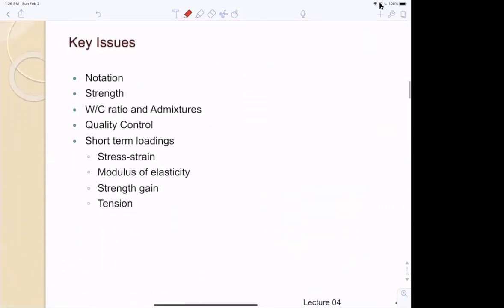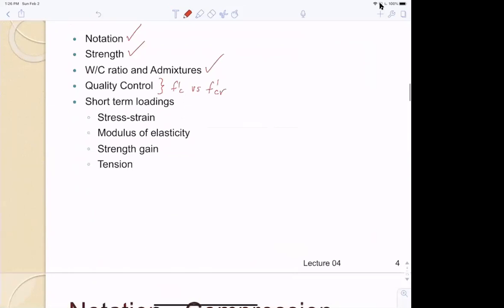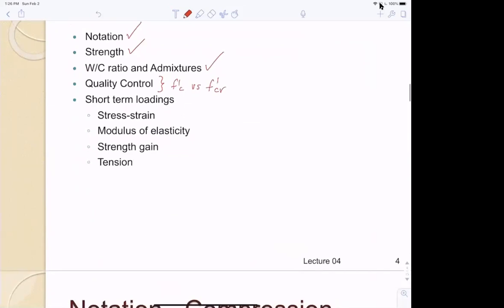The key issues we're going to talk about today are the notation, the strength, how the water-cement ratio and admixtures affect the strength and other properties, quality control - specifically F prime C and required average F prime CR - and the short-term loading behavior of concrete.